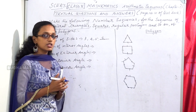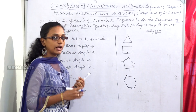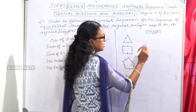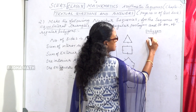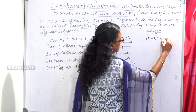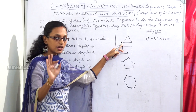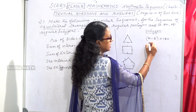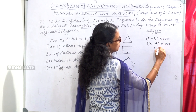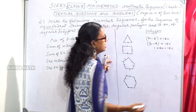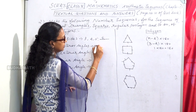Sum of interior angles — we learn the formula. The formula is (n-2) into 180. For a triangle with 3 sides: (3-2) into 180 = 1 into 180 = 180 degrees. The sum of interior angles of a triangle is 180.